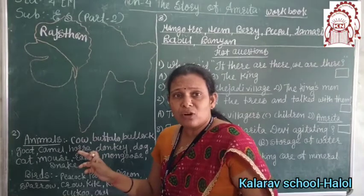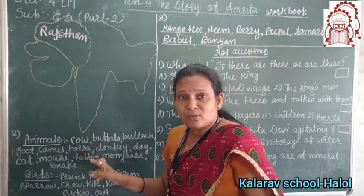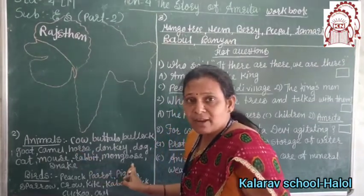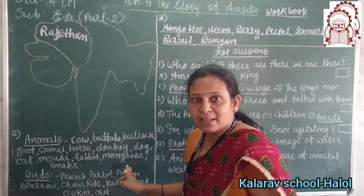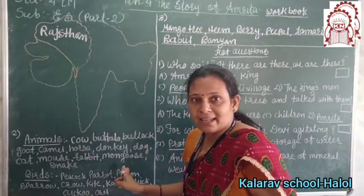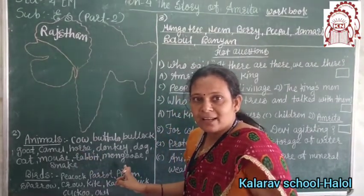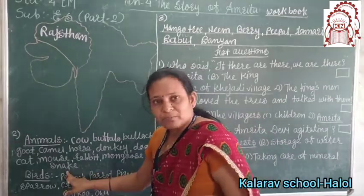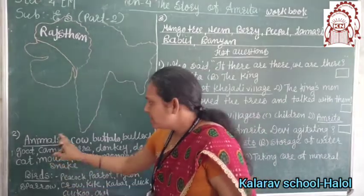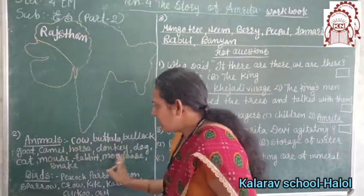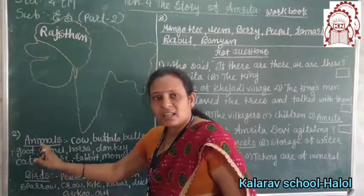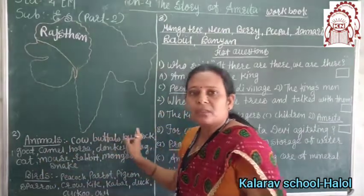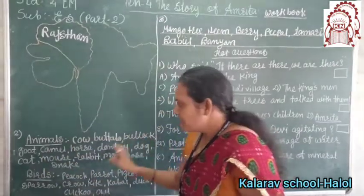What is the meaning of mongoose? Mongoose means the nevla. You have seen the serial about the nag? That is the mongoose. And snake also. These are the animals you see in the outskirts of the village.